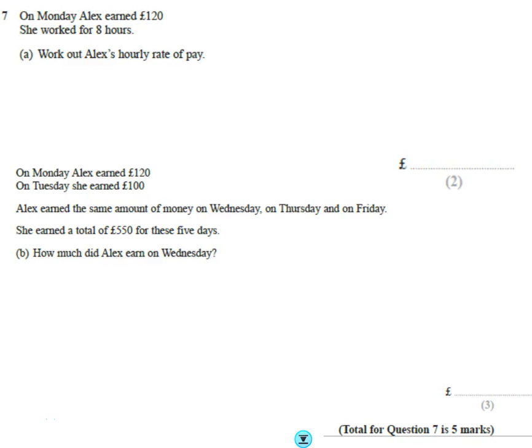Question number seven on this first of the foundation papers is all about Alice earning some money. She earned £120. She worked for 8 hours. Work out Alex's hourly rate of pay.